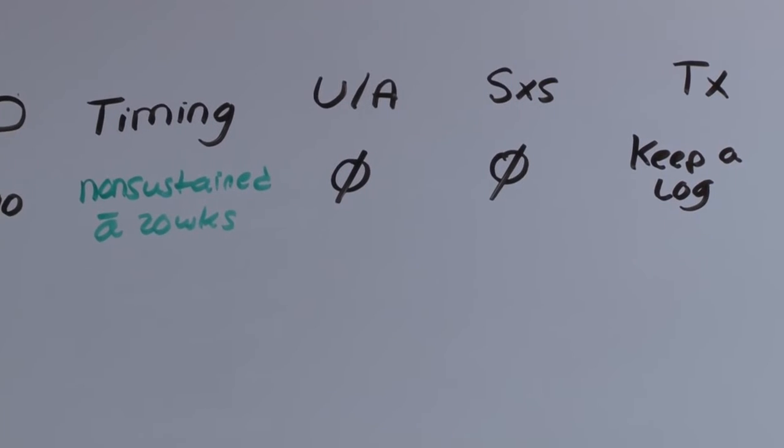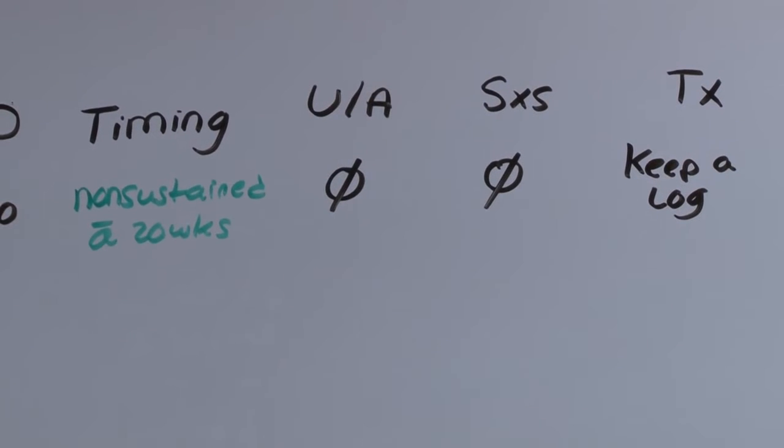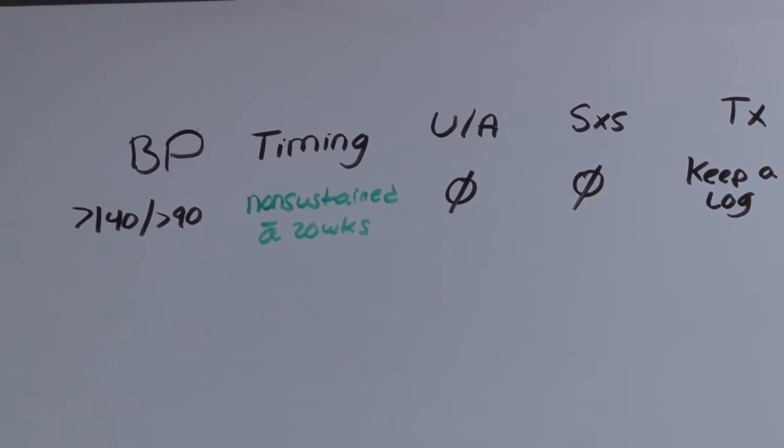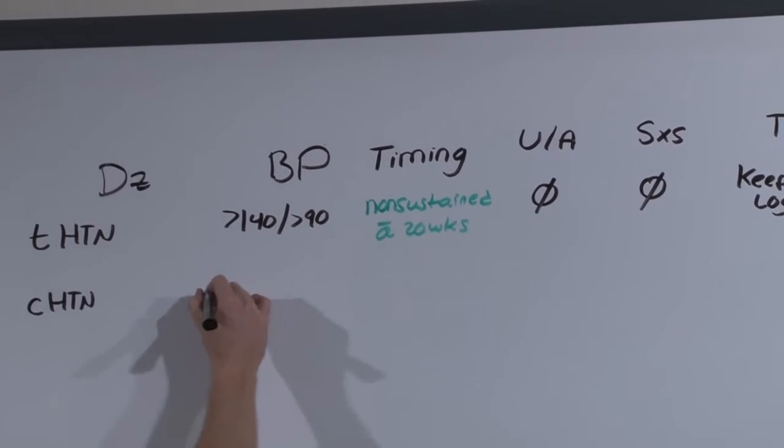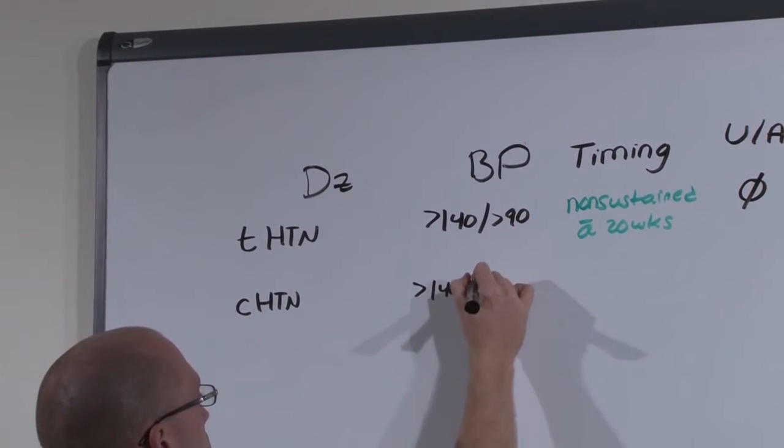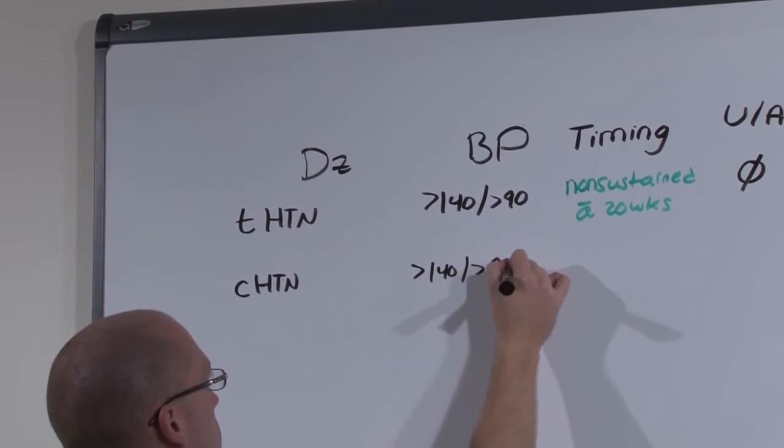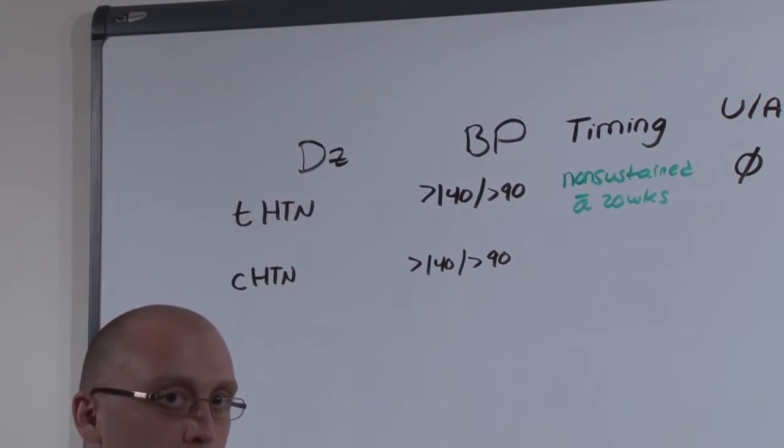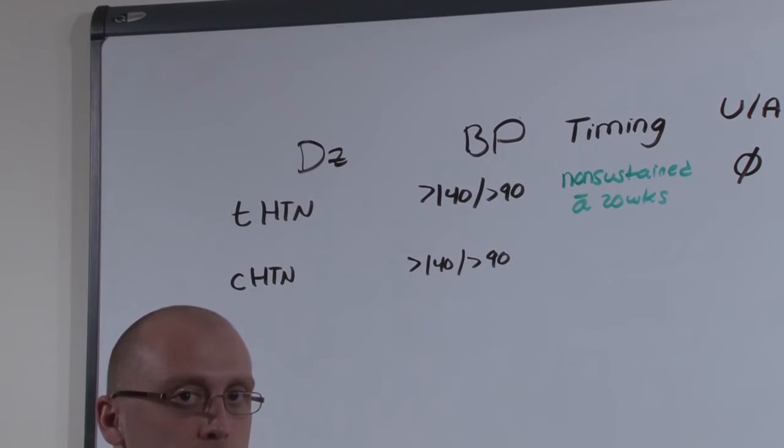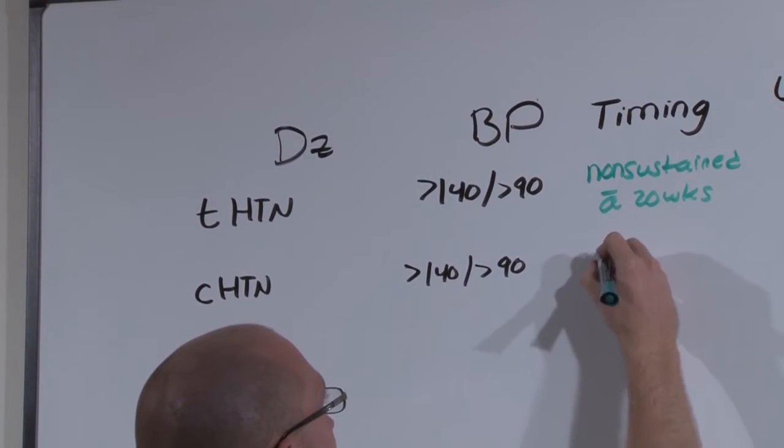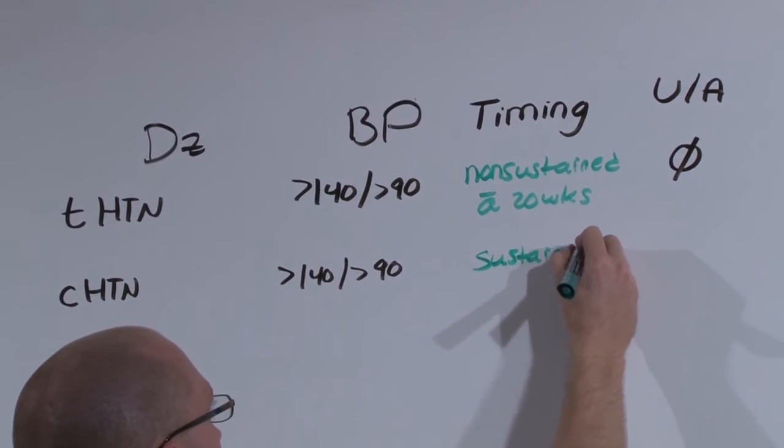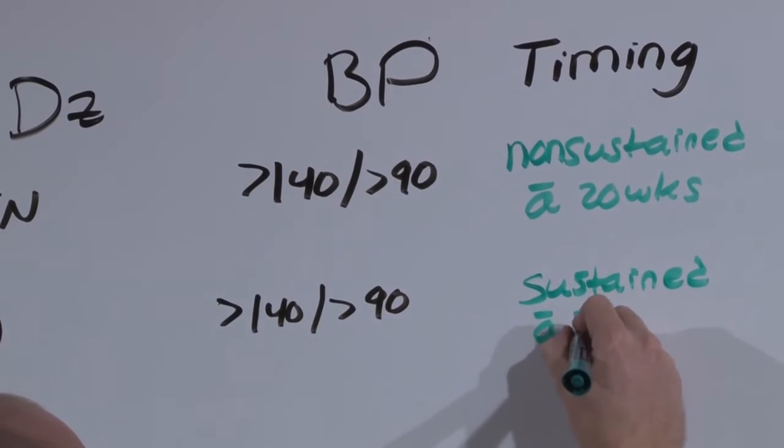If you compare that now to chronic hypertension, this is what most medical doctors deal with all the time. Someone who comes in has an elevated blood pressure greater than 140 over 90, and they had hypertension before they got pregnant, and they still have hypertension now. They have a sustained blood pressure elevation that occurs before 20 weeks of gestation.